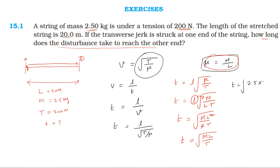So, we have to take the square root of mass of the wire. So time taken by the disturbance to travel from one end to another end is 1.5 seconds.